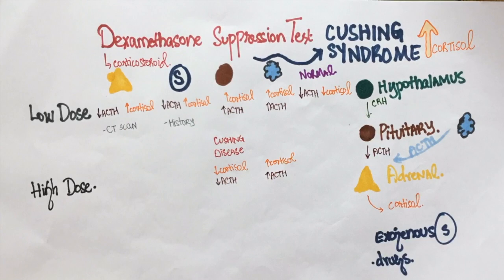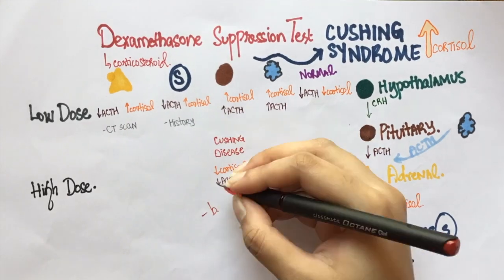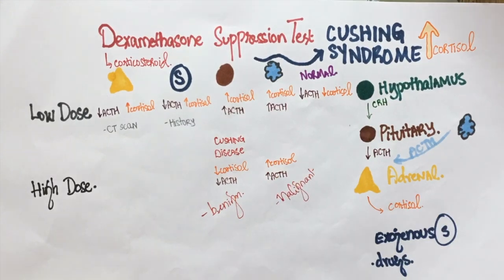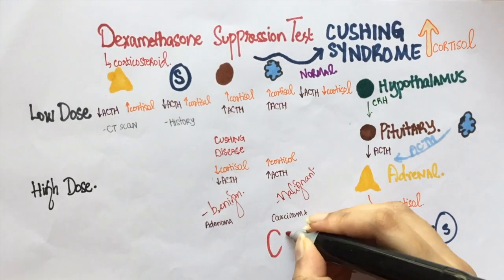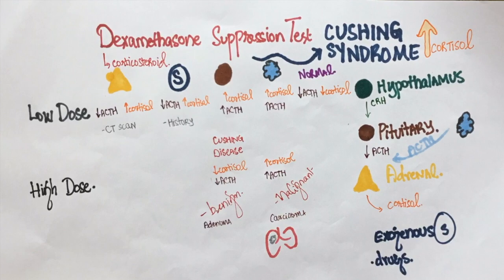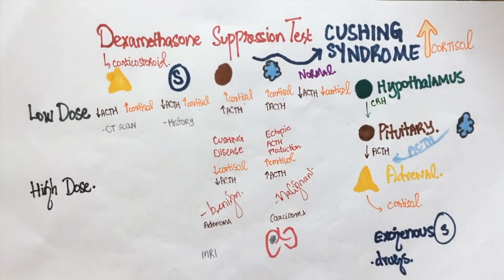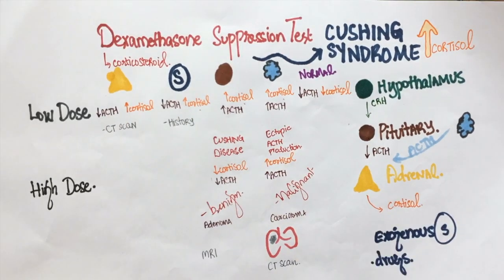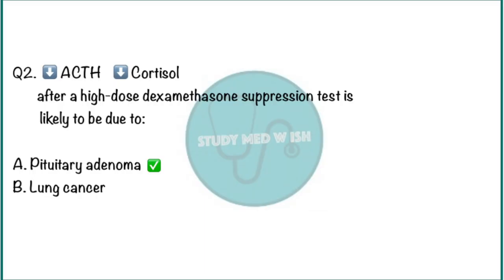Here's how I think of it: since the pituitary adenoma is benign, it can be suppressed by high-dose dexamethasone. However, since lung cancer is malignant, it cannot be suppressed. We can locate the adenoma with an MRI of the brain. Ectopic ACTH production can be located by performing a CT of the chest, abdomen, and pelvis. So the correct answer is pituitary adenoma, known as Cushing disease.